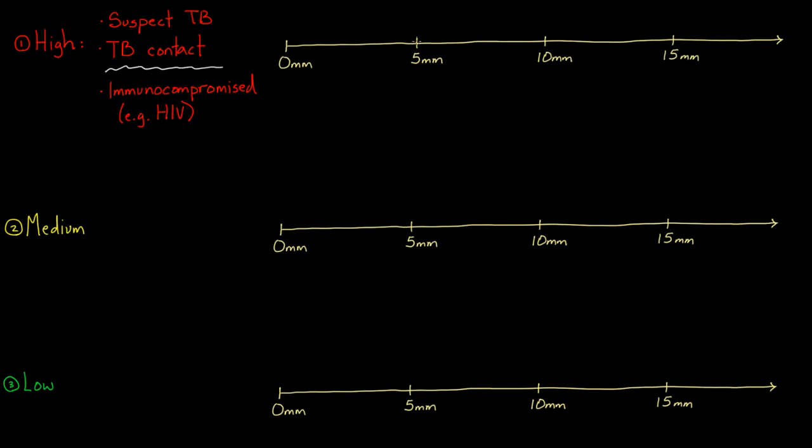So in this first group, the high risk group, either I'm really worried they have it or I'm worried that if they did get it, they would get really sick with it. For these folks, a positive test would be induration—remember, with PPD you're measuring induration. Anything above 5 millimeters would be considered positive. So for example, if someone with HIV comes and they have a PPD of 6 millimeters, then they would definitely be positive.